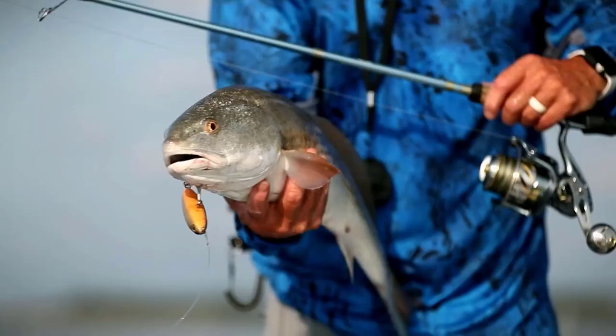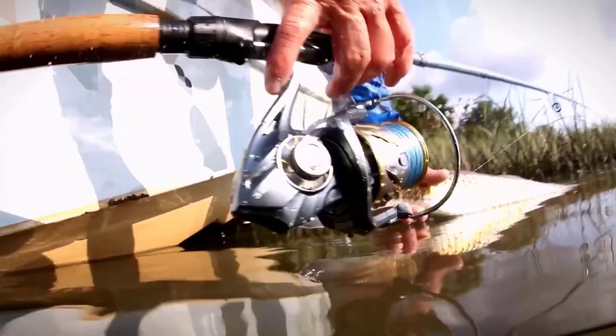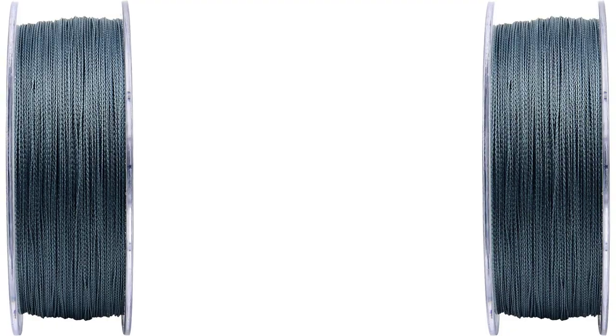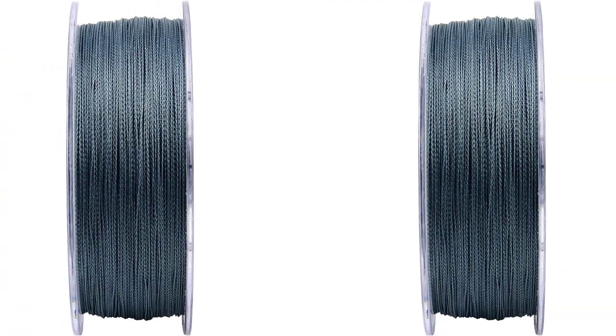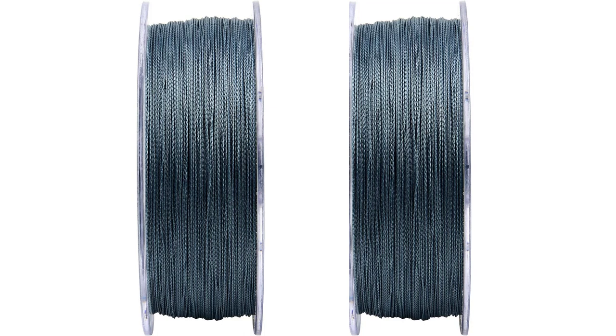It is available in many fade-resistant colors: gray, green, blue, pink, white, yellow, and multicolor. Casking is considered the best of the best fishing line for spinning reels and baitcast reels.